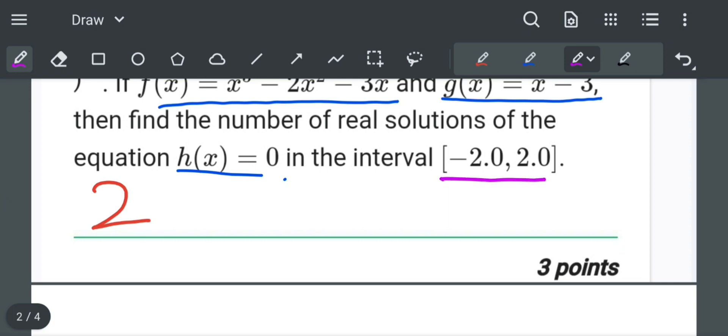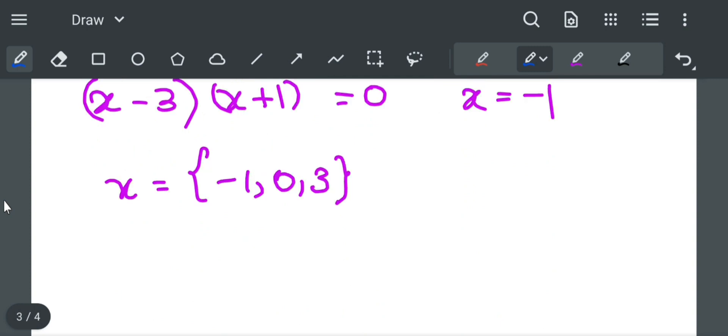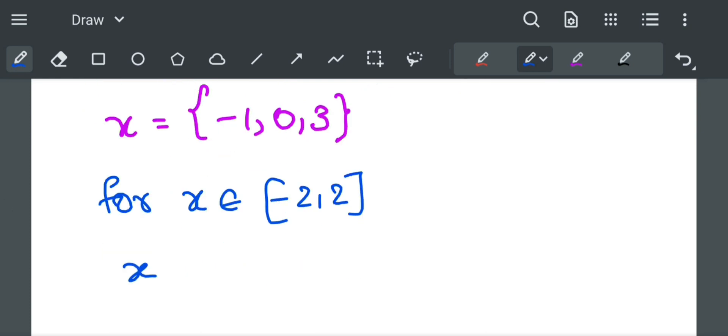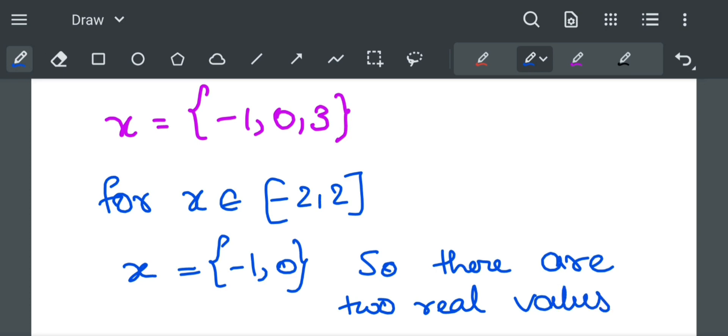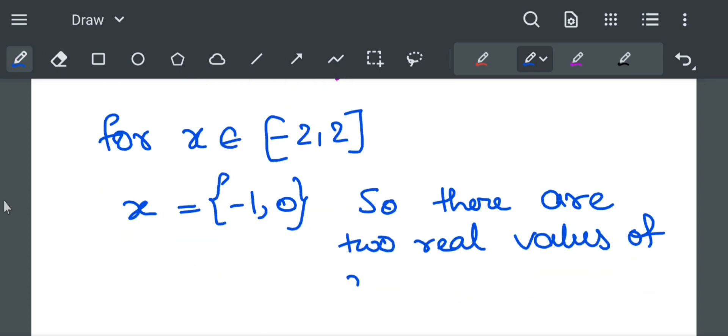So for x belongs to the interval minus 2 to 2, we get the answer as x equal to minus 1 and 0. So there are two real values of x for which h of x is equal to 0. Thank you.